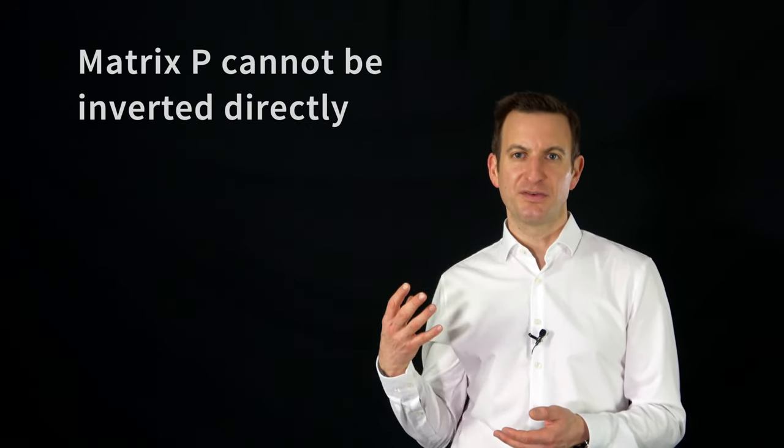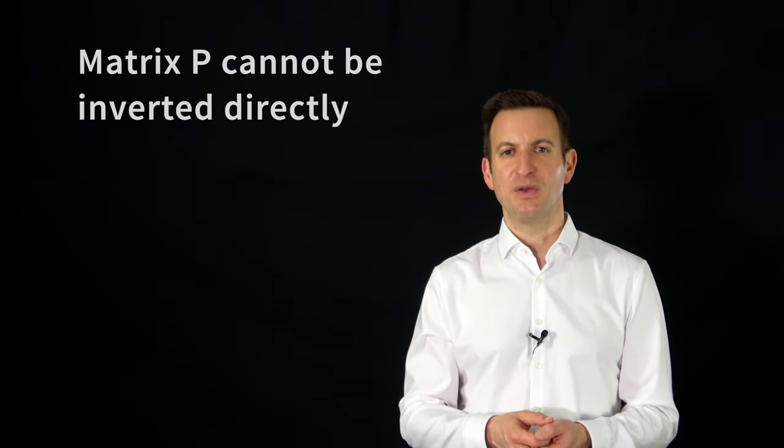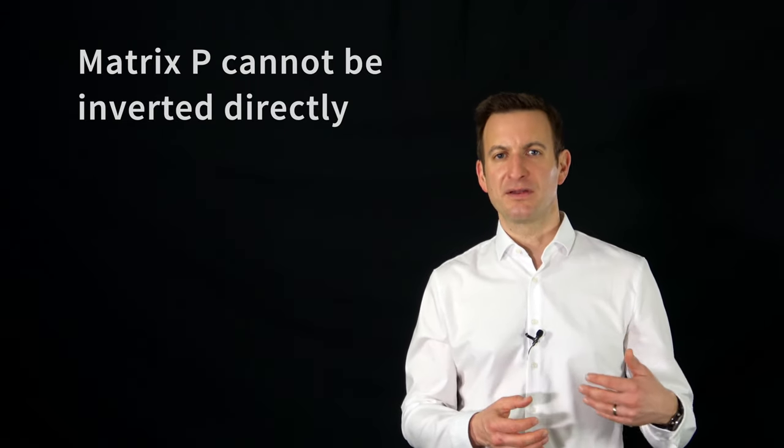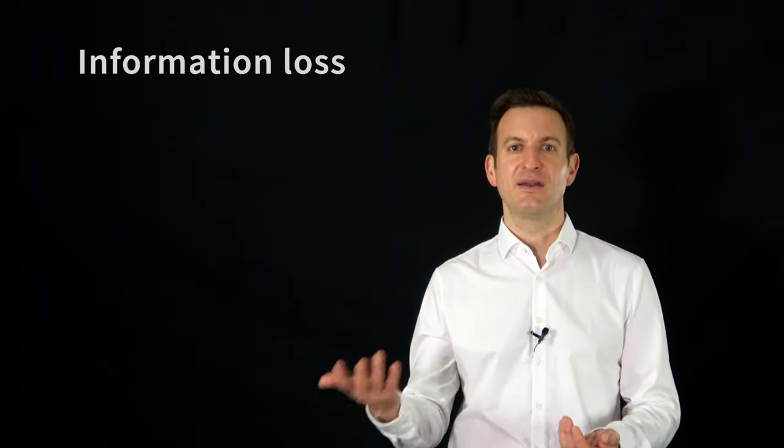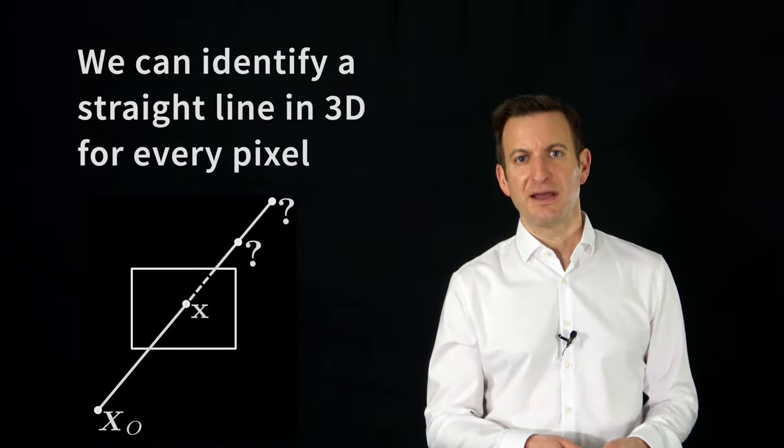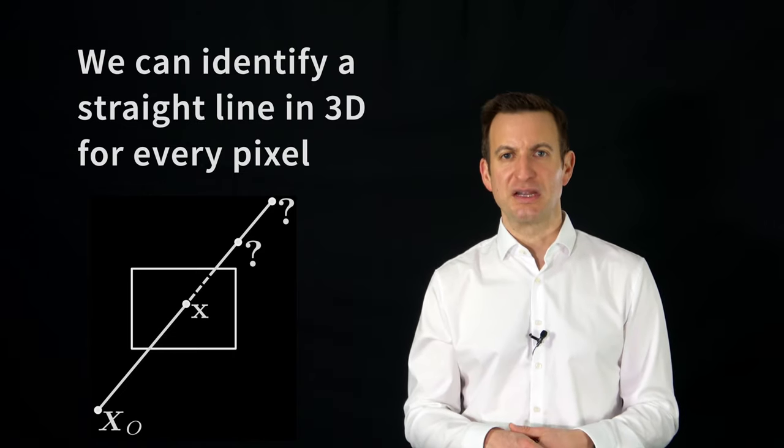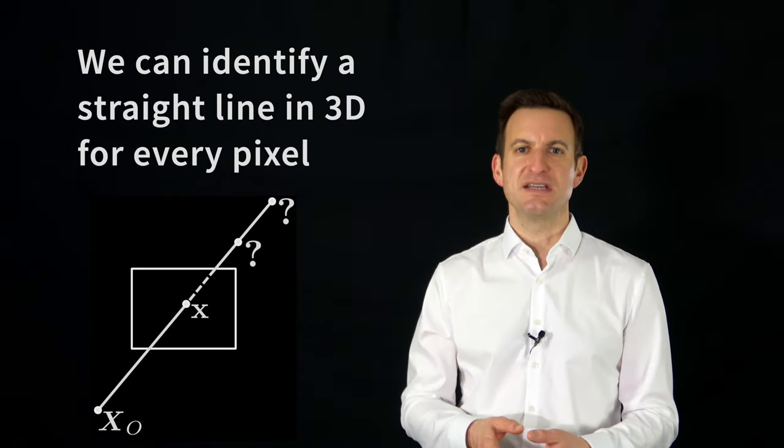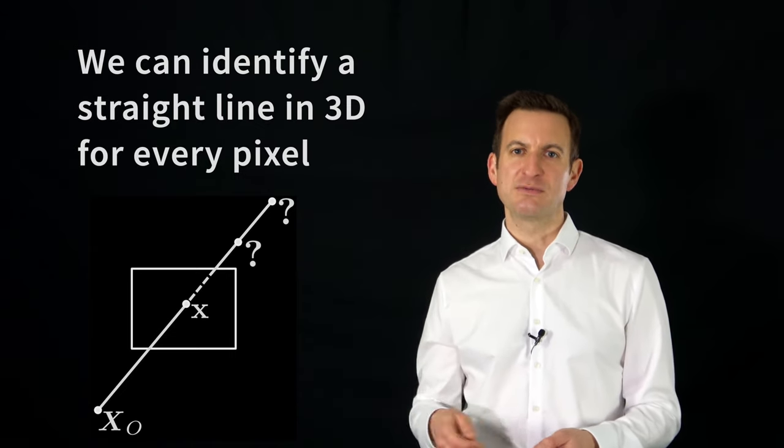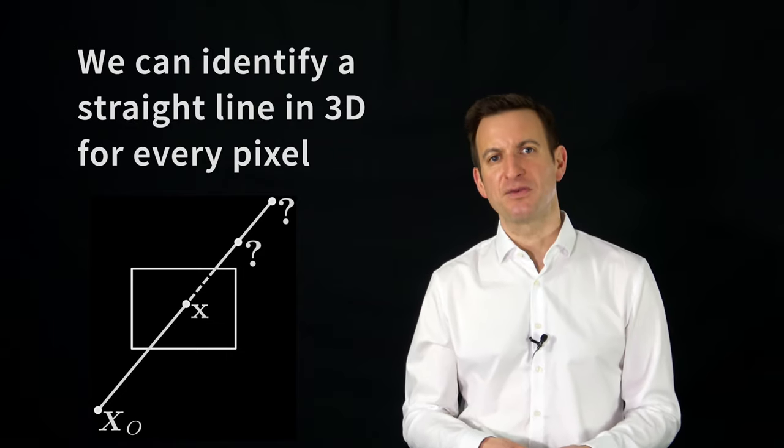It should be noted that this transformation from the world to the pixel coordinate, so x equals PX, is a mapping that only works in that direction. We cannot easily invert it. The reason for this is that we have a 3D point in the world that's mapped to a 2D coordinate, so there's a loss of information. We cannot simply invert it and recover the 3D location of the point. But we can identify a straight line on which this point actually lies. That means that every pixel basically corresponds to a direction in space, and we know that all the points which lie on that line will actually be mapped to the same pixel coordinate.